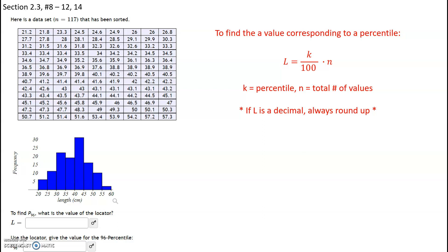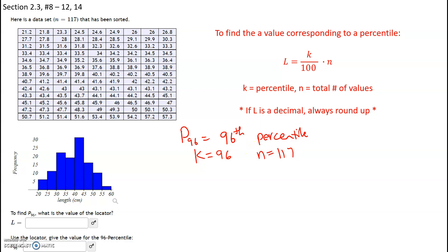We have a data set with n equals 117, which means we have 117 values, and we want to find P sub 96, which is going to be the 96th percentile. To find the value corresponding to a percentile, we're going to use the locator index formula: k divided by 100 times n, where k is a percentile and n is the total number of values. Our k is going to be 96 and our n is going to be 117.